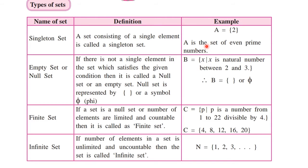Let's have an example. Set A is the set of even prime numbers. A has only such elements that are evenly prime, and we know there is only one number that is evenly prime, and that number is 2. Therefore, A contains only one element, that is 2. Such sets are called singleton sets.